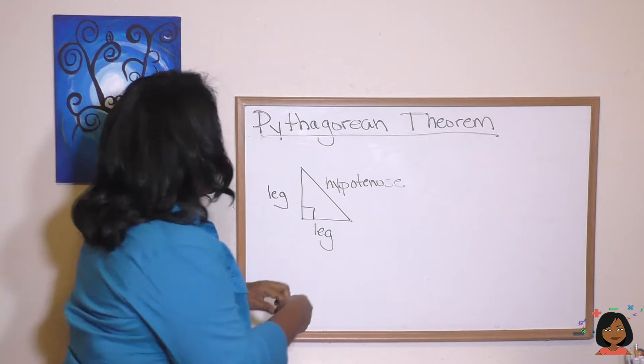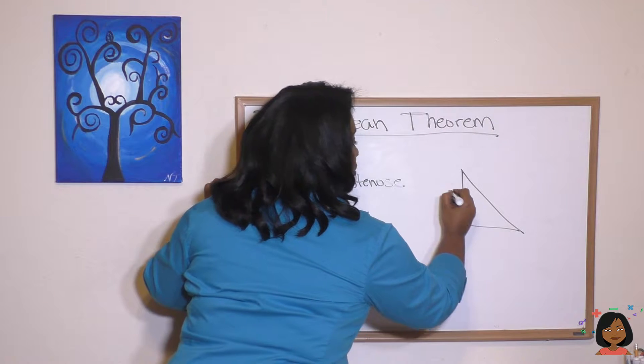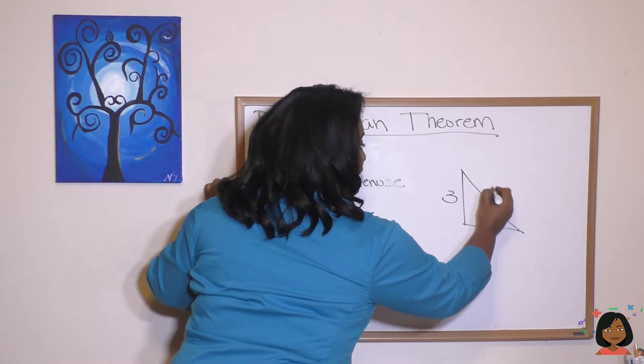He said that the square of this leg plus the square of this leg equals the square of this leg. And here's how he drew it out. So I'm going to do it over here. So let's say that this side was a 3, this side was a 4, and this side was a 5.